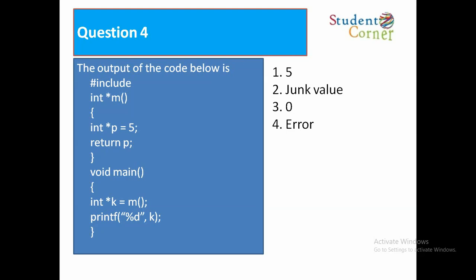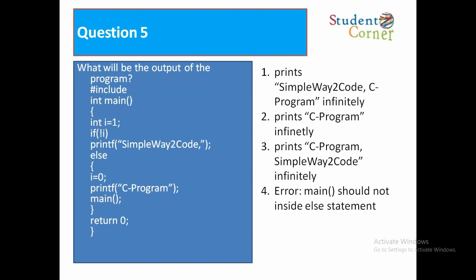The output of the code below is hash include int star M, int star P is equal to 5, return P. Void main, int star K is equal to M, printf percentage dk. Option 1 is 5, option 2: junk value, option 3: 0, option 4: error. The answer is 5.